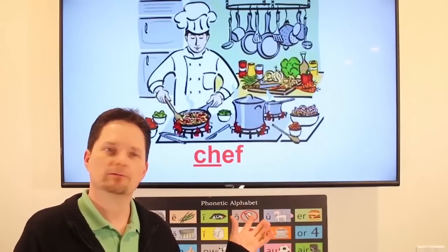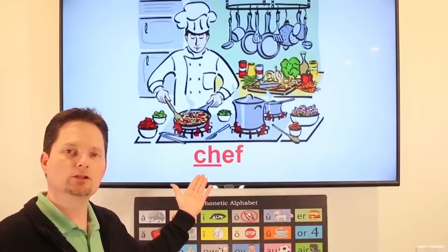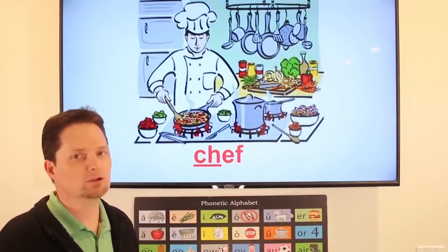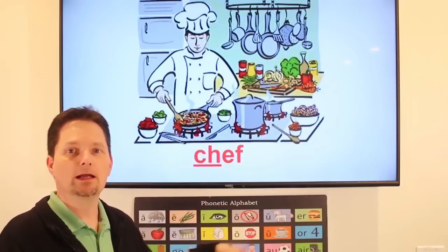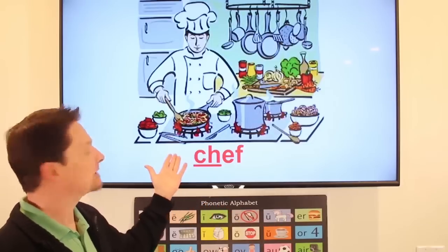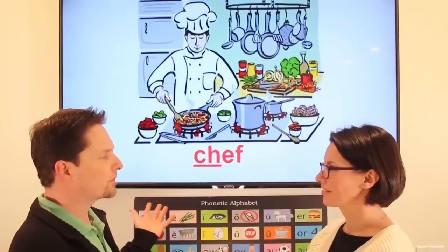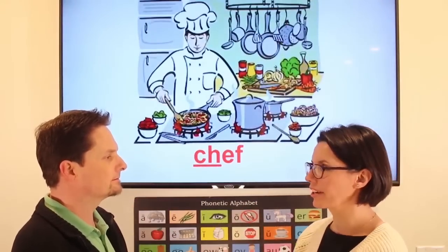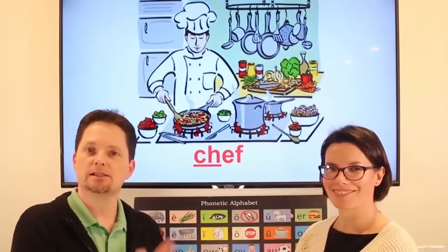Example: chef. We have the C-H, but we pronounce it soft — shh. Chef. Don't say 'chef' with a hard ch sound; say 'chef.' He's a chef, and he's preparing a gourmet meal. Is the chef preparing a gourmet meal? Yes, the chef is preparing a gourmet meal.